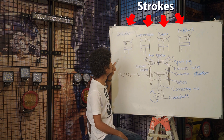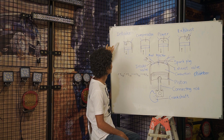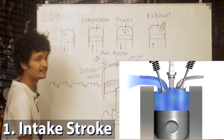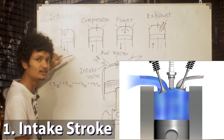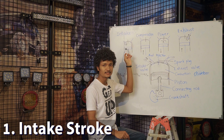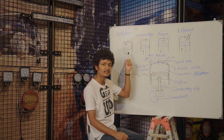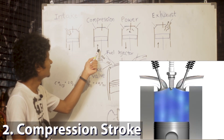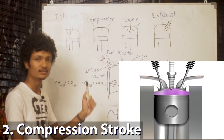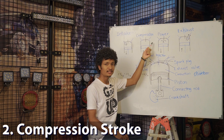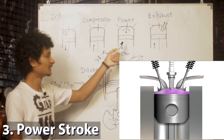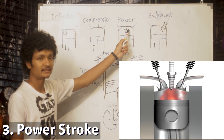For the engine, we can talk about the intake stroke — drawing the air-fuel mixture into the cylinder. Then the compression stroke compresses the air-fuel mixture with the intake valve closed. The power stroke ignites the air-fuel mixture with the spark plug.